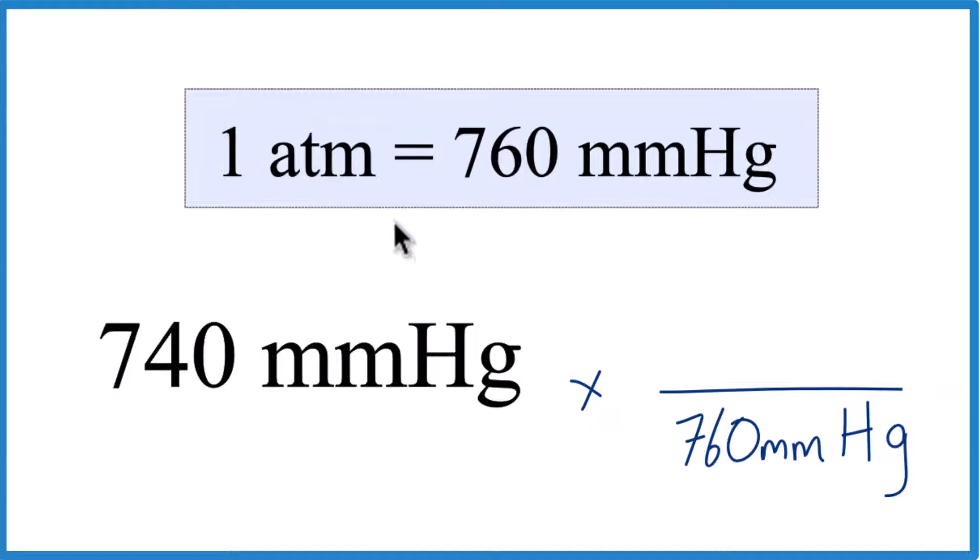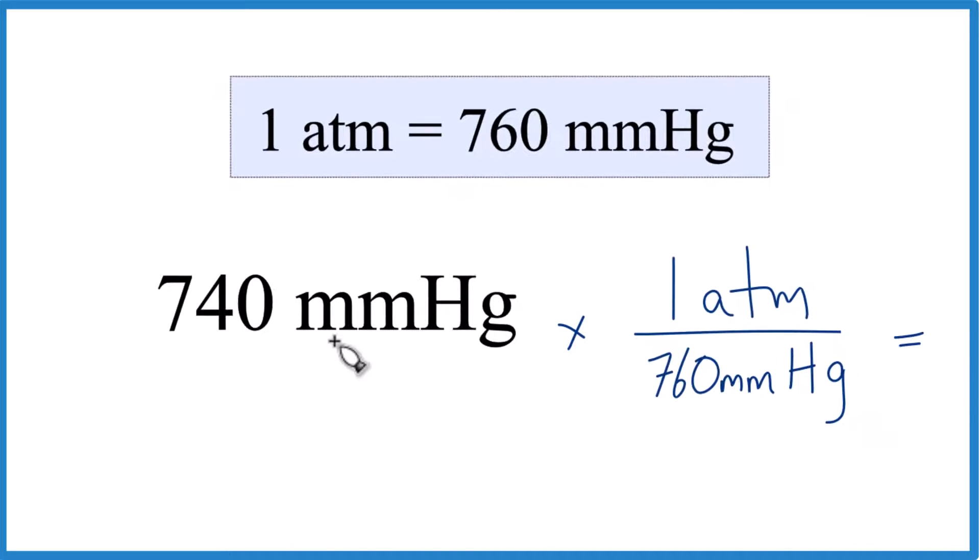We want to end up with atmospheres, so that goes on the top. When we do the math, millimeters of mercury on the top and bottom cancel out. We're left with atmospheres.